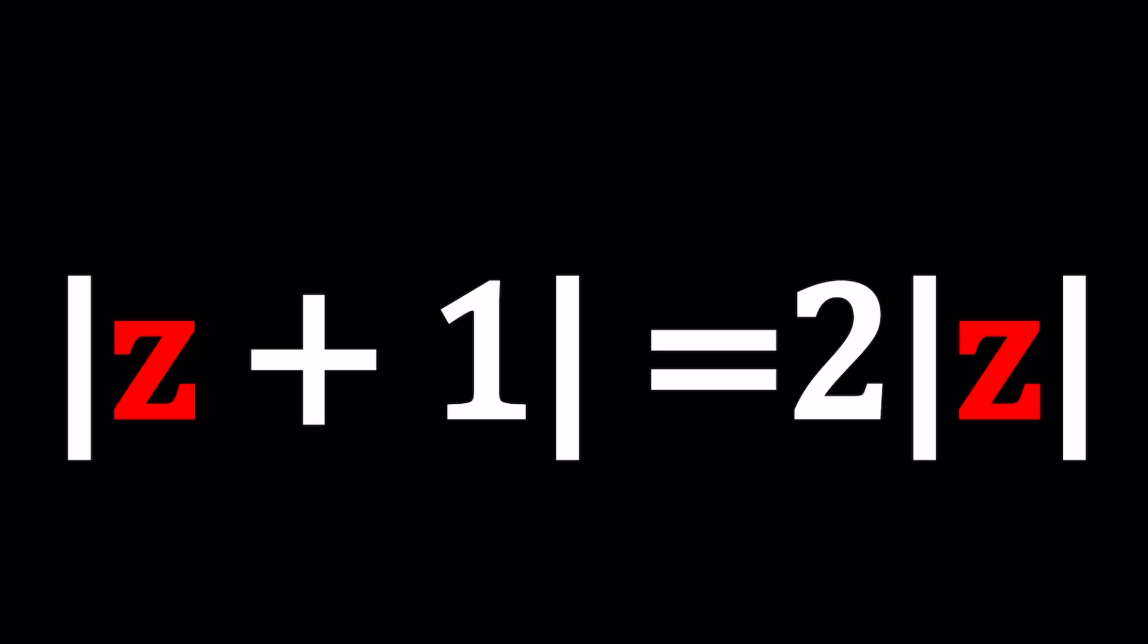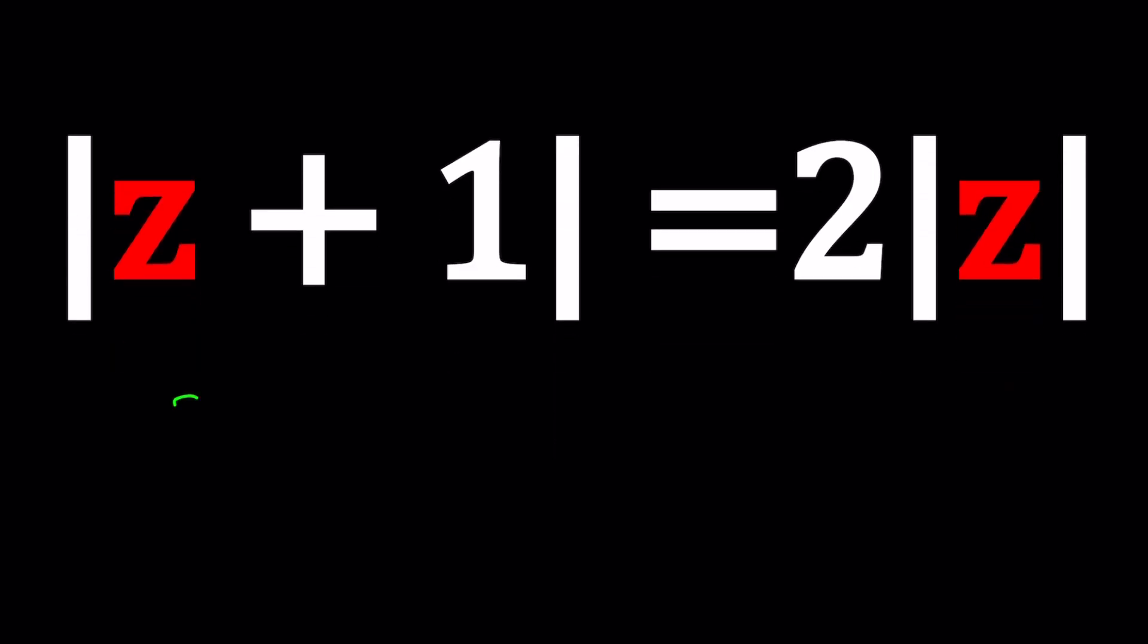Since this is a locus problem, usually locus problems are better expressed with X and Y. So I apologize A plus B I, the name of this channel. I'm going to have to use X plus Y I this time, but next time I promise I'll try to use it. So set Z equal to X plus Y I. And the reason behind that is we want to get a set of points which can be expressed as an equation. So it's going to be a curve or maybe a straight line or something like that. That's why it's better to use the XY system.